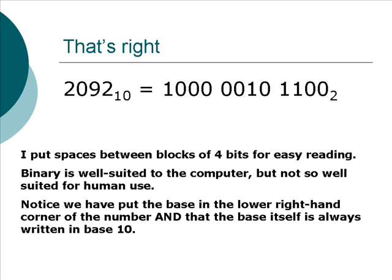So, 2092 base 10 is equal to that long string of bits, base 2. Notice that I put spaces between blocks of 4 bits for easy reading. Binary is very well suited to the computer, but it's not so well suited for human use. Notice that we have put the base in the lower right-hand corner of the number, and that the base itself is always written in base 10 by convention.